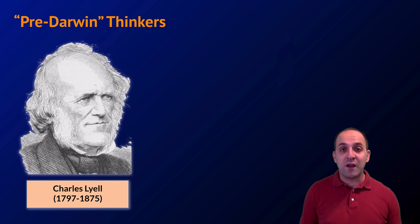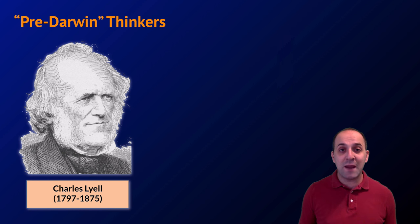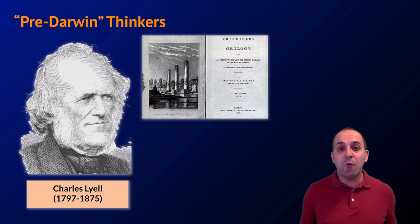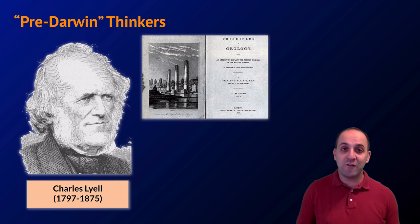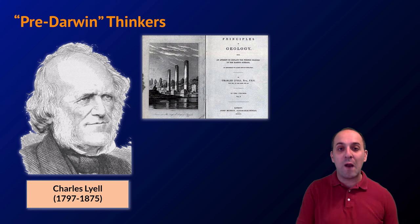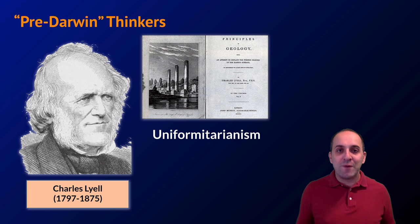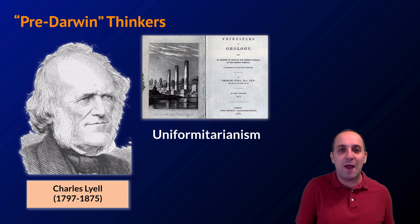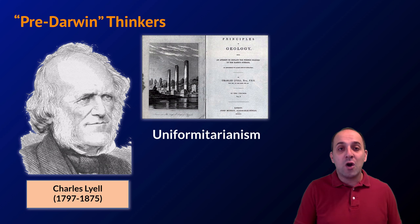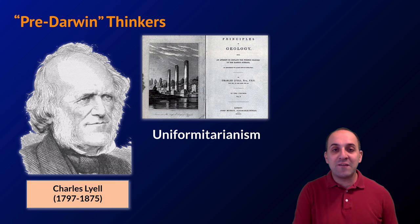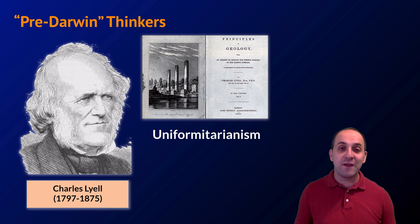Charles Lyell was another pre-Darwinian thinker whose work really influenced Darwin. His major contribution was really giving rise to the field of geology. He wrote a book called Principles of Geology, and we know Darwin actually brought this book with him on his travels around the world on the HMS Beagle. Lyell and other geological thinkers of the time were advancing a notion known as uniformitarianism — the idea that the processes we see at work on earth today are the same processes that have shaped earth throughout history.